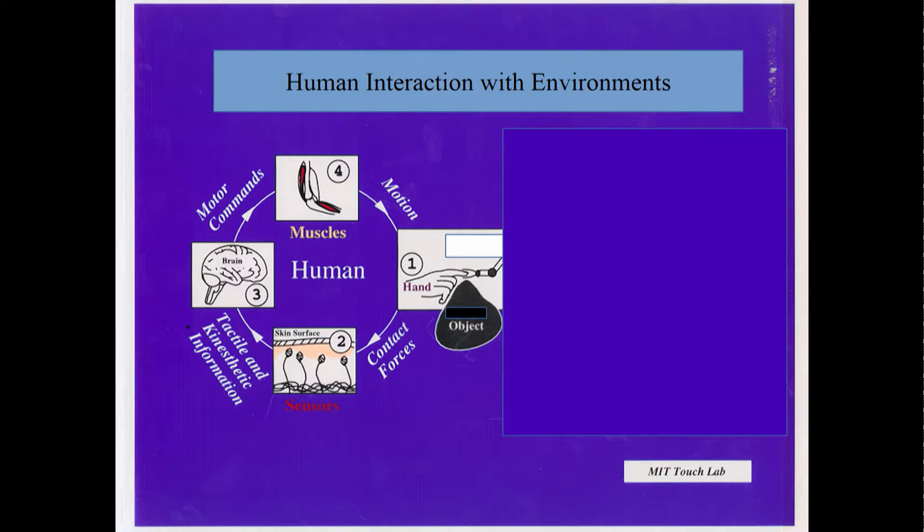We have the hands when we touch, because we touch there are some contact forces developed and these contact forces are sensed by the sensors in our skin. The sensors convey the tactile and kinesthetic information to the brain and the brain processes this information and then asks the muscles to move or do certain things. The muscle actually moves and therefore we are moving the hands, we are manipulating the objects. This is a very rough, very crude idea of what is happening in haptics.